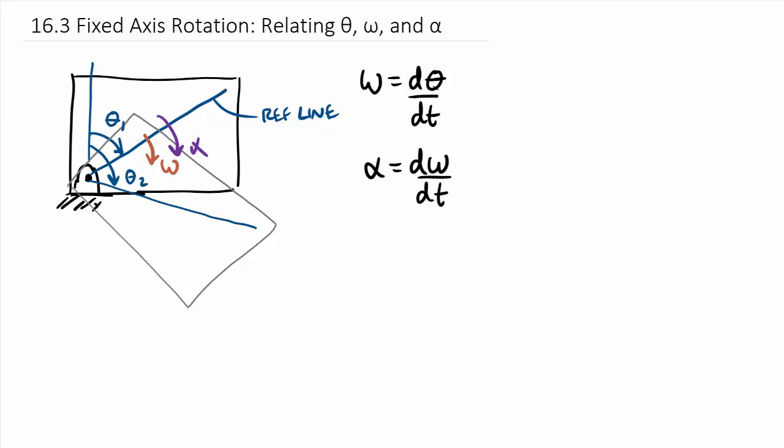So these equations should look pretty familiar to you, as they're generally the same equations as we related linear position, linear velocity, and linear acceleration. So in linear motion, we ended up relating our position to our velocity to our tangential acceleration. And in angular, we're going to relate our theta to our omega to our alpha.